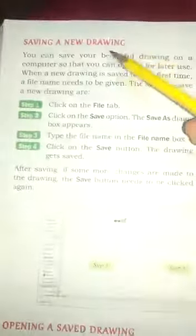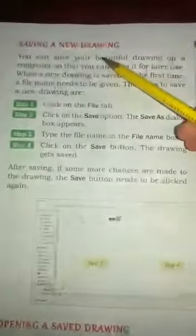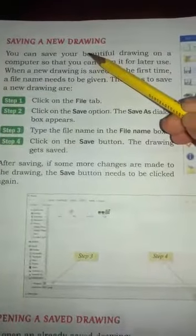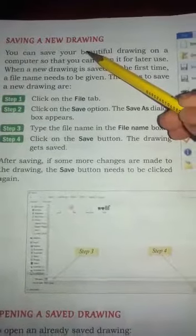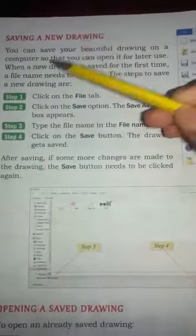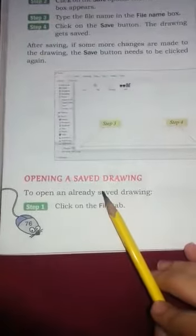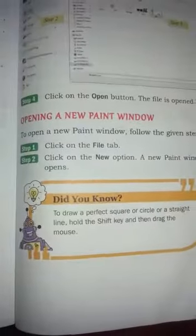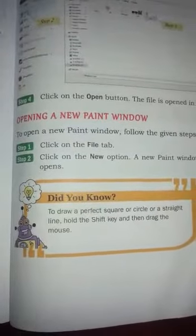On page number 76 is saving a drawing. We save the drawing. How do we open the steps? We open the new paint window.